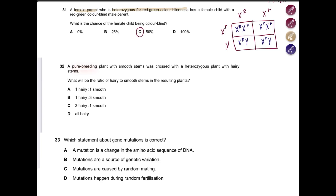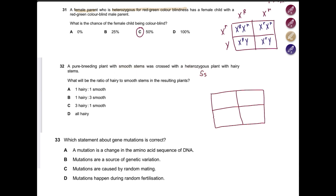A pure breeding plant — which means homozygous — with smooth stems is crossed with a heterozygous plant with hairy stems. What will be the ratio of hairy to smooth stems? Using the letter S: a heterozygous plant has capital S and small s. The dominant allele always shows up in heterozygous plants, so capital S is hairy and small s is smooth. The pure breeding smooth plant is ss. Drawing the Punnett square gives two hairy and two smooth — a 1:1 ratio. Answer: A.